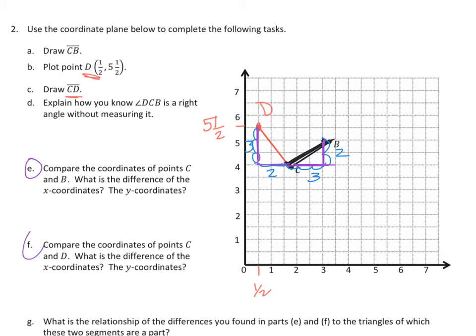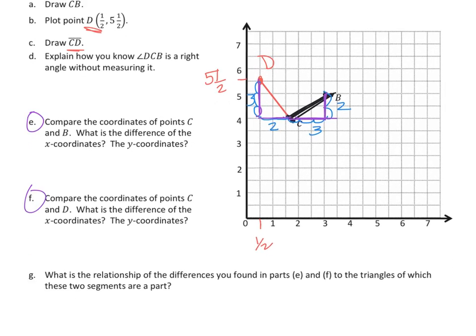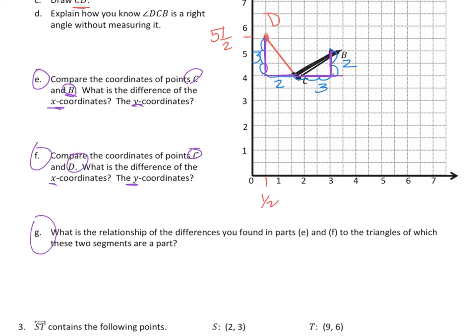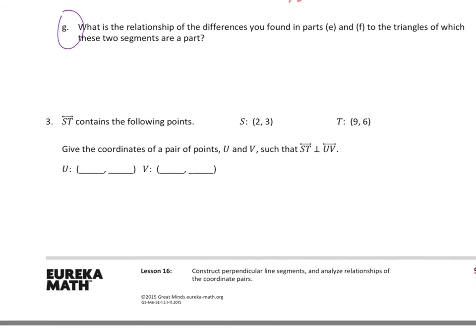Now you can go through and do E, F, and G, very similar to the way that we did it on the last page. Compare the X and Y coordinates of B and C, and then compare the X and Y's of C and D, and then do that explanation again with the relationship.